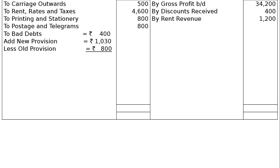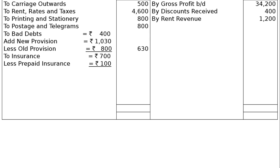The old provision for doubtful debts is taken from the trial balance as rupees 800. Bad debts of rupees 400 are given in the extracts. After adding the new provision and deducting the old provision, the net figure in the final column is rupees 630. Next, insurance rupees 700 less prepaid insurance rupees 100 as per adjustment D, giving rupees 600 in the final column.